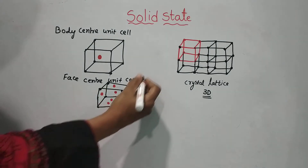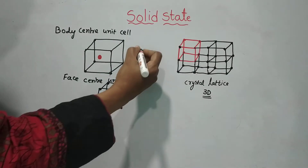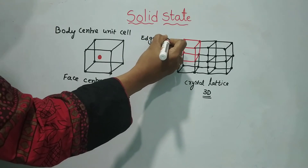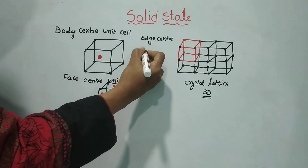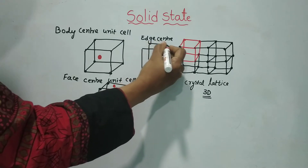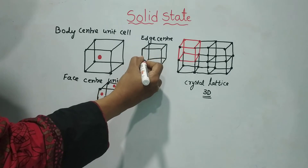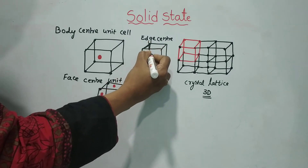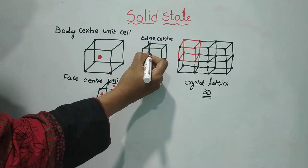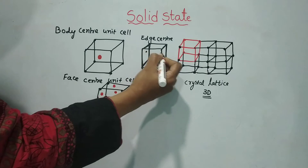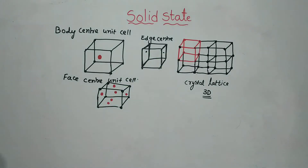Next is the edge center unit cell. In the edge center unit cell, particles are present at the middle of each edge. So the three types of centered unit cells are: body center, face center, and edge center.